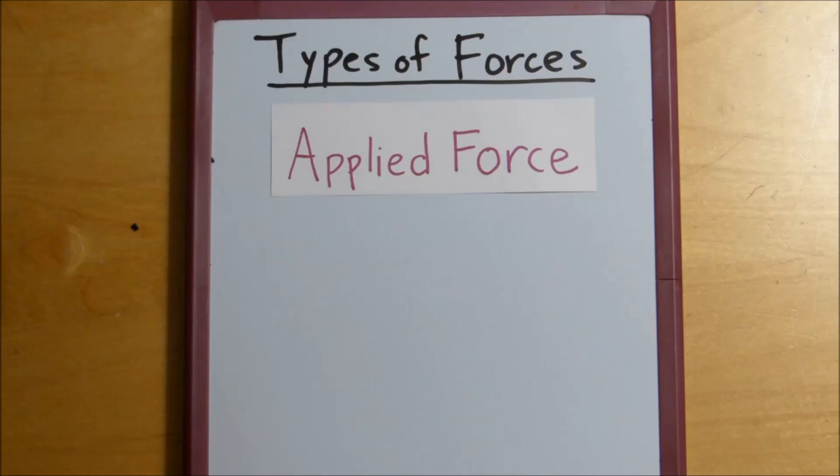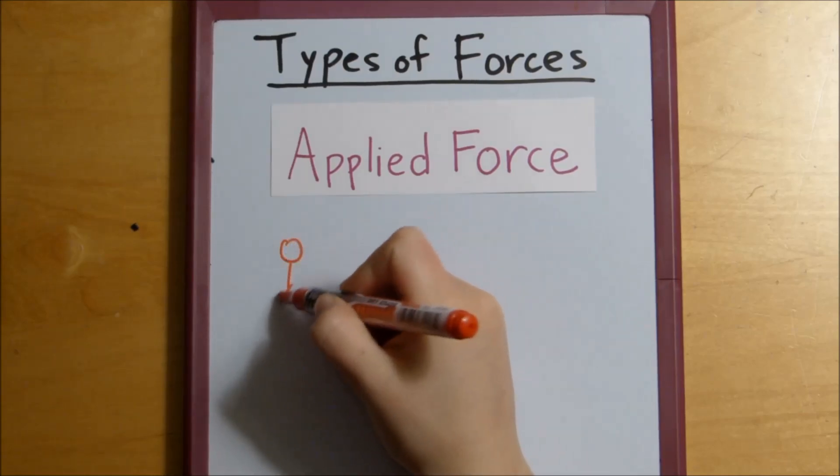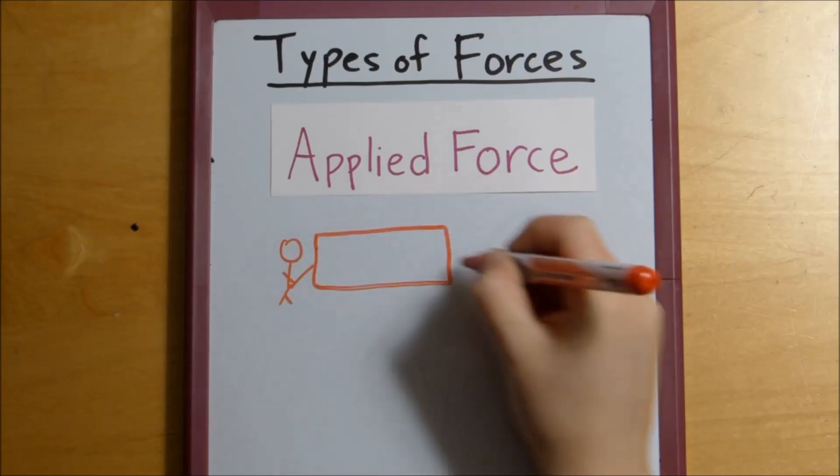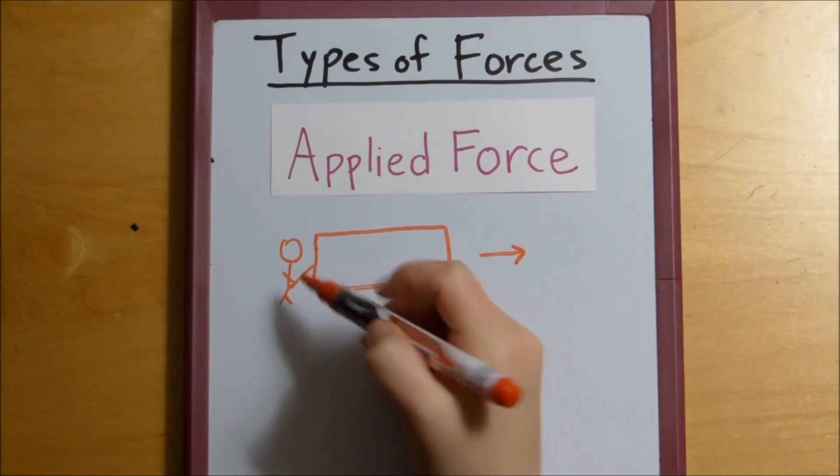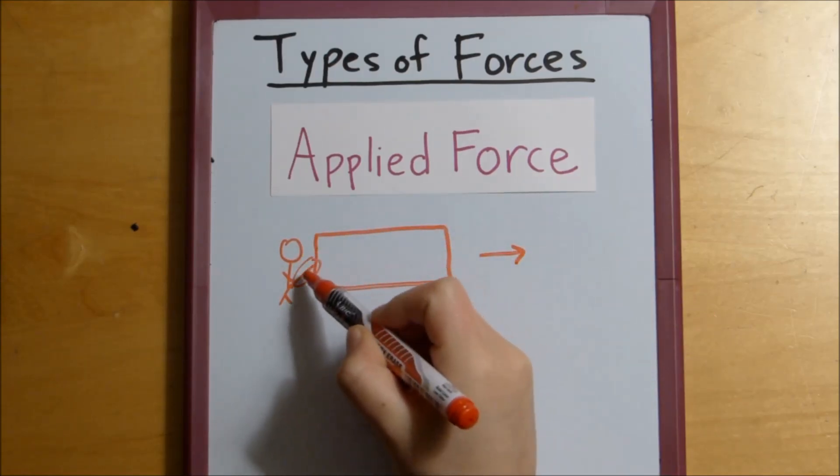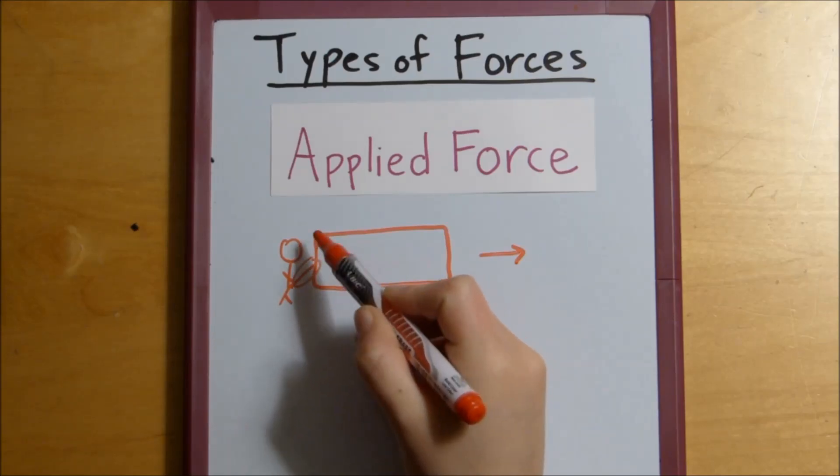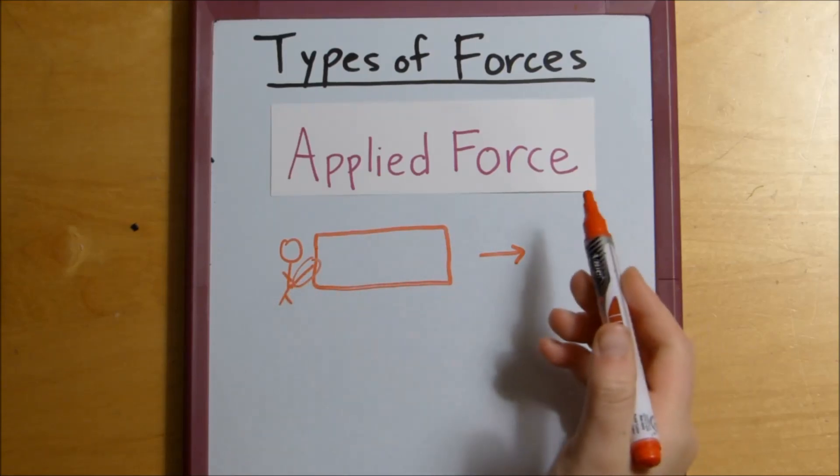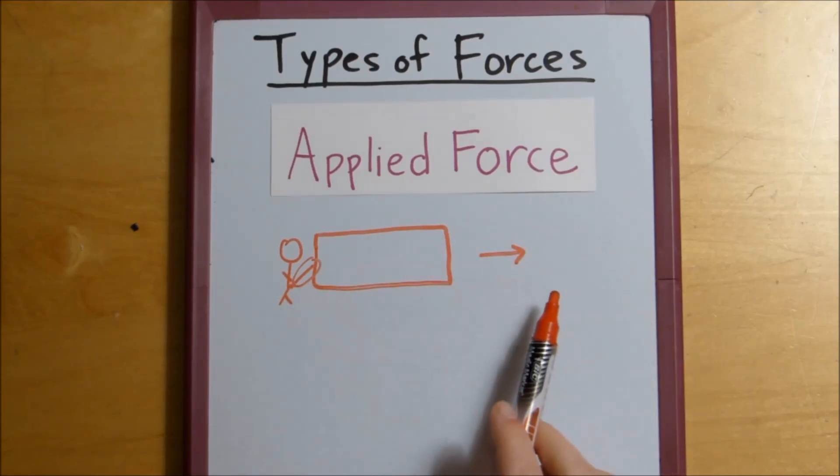So let's say we have some guy, let's say his name is Bob, and he's pushing on this box to move it forward. This contact between Bob's hand and the box is the applied force. It's what makes the box move forward.